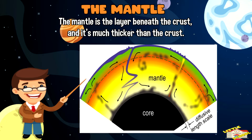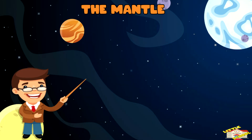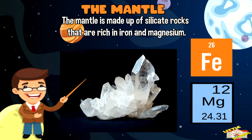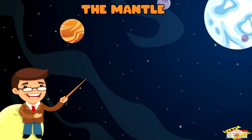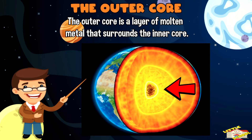The mantle is the layer beneath the crust and it's much thicker than the crust. The mantle is mostly solid but it can flow slowly over long periods of time. The mantle is made up of silicate rocks that are rich in iron and magnesium.